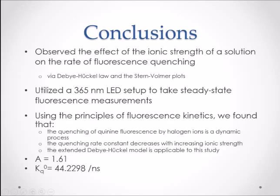In our experiment, we directly observed the effects of the ionic strength of a solution on the quenching rate of fluorescing quinine. From the emission peak maxima, we were able to plot the Debye-Hückel and Stern-Volmer plots, which allowed us to calculate quenching rate constants and deduce a quenching mechanism. We found that the quenching of quinine fluorescence by bromide is a dynamic process because the quenching rate constant decreased with increasing ionic strength.